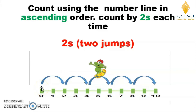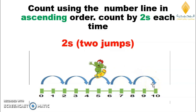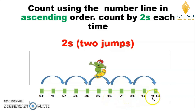Count with me: zero, two, four, six, eight, ten. Look at how the number line helps us count! Let's count by twos again looking at the number line: zero, two, four, six, eight, ten. The number line helps us to count.